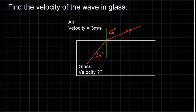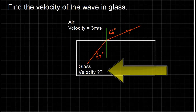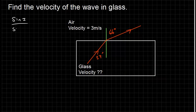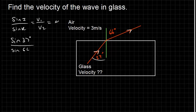Let's look at another example: find the velocity of the wave in the glass. I'm looking this time for the velocity. Before you get worried, just write the formula. Substituting the numbers in — this is the angle of incidence because the wave is going this way — so it's sine 37 divided by sine 66 equal to the velocity in the glass. This is medium 1, so V1 is missing, and I've been given the velocity in air which is 3 meters per second.